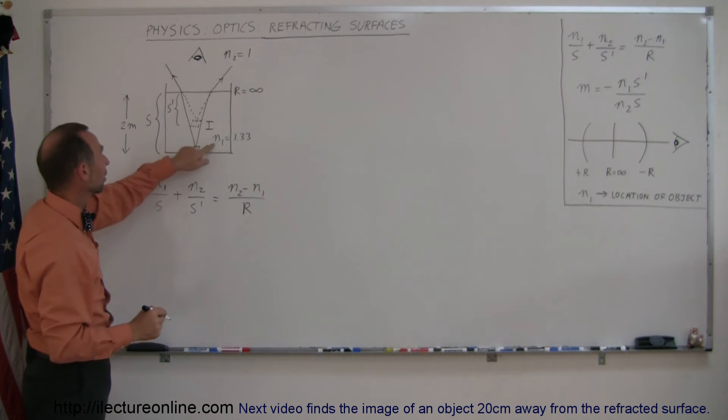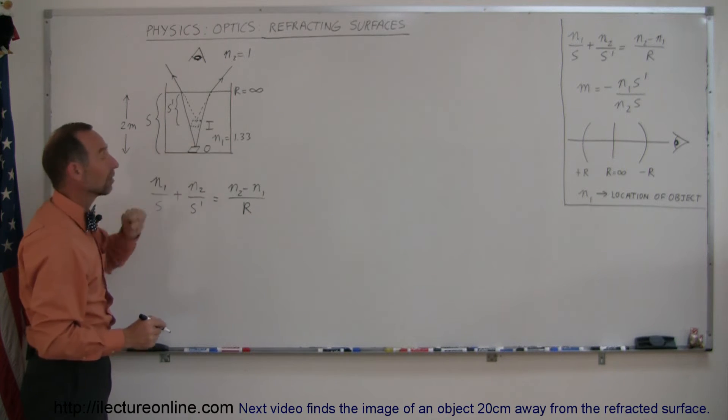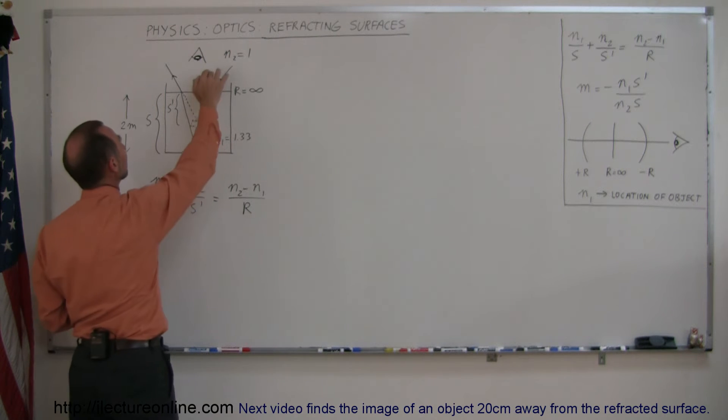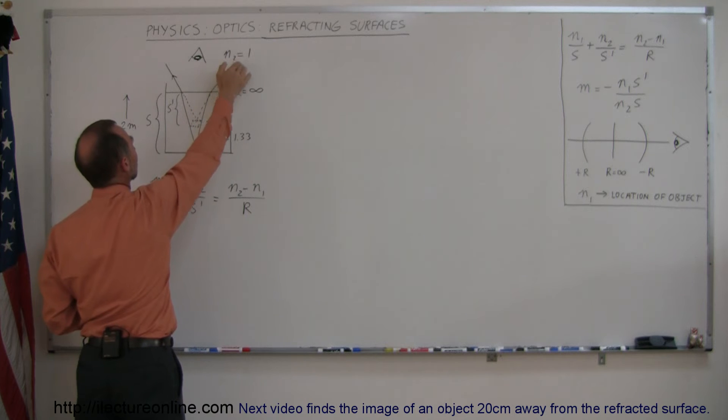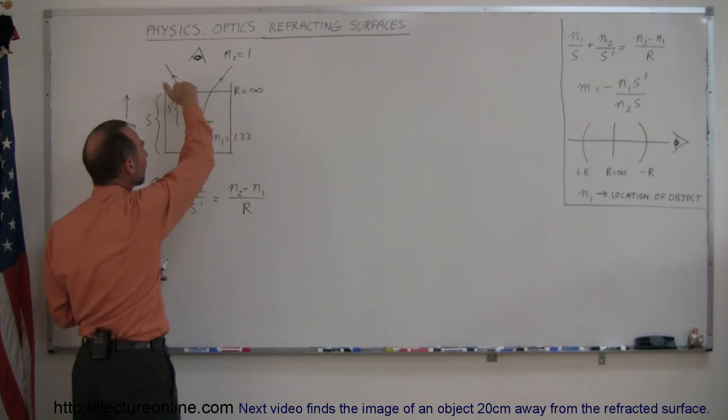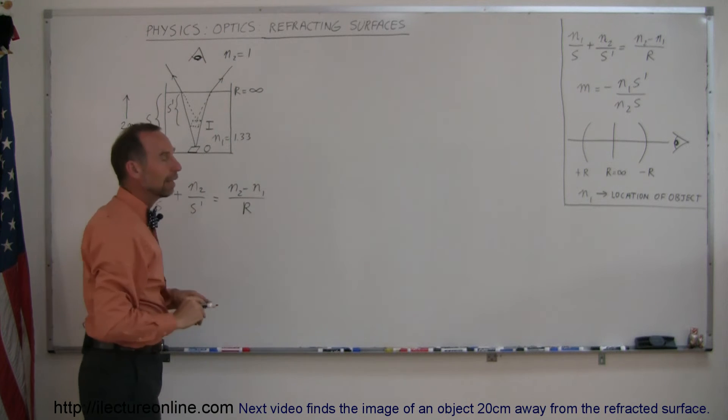Now, typically N1 is the index of refraction where the object is at, so in this case it's inside the pool, so there's an index of refraction of 1.33. N2 would be the index of refraction on the other side of the boundary, which is air, so it's 1. The radius of curvature, since the boundary is flat, would be infinite.